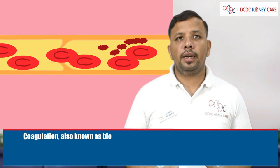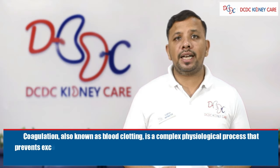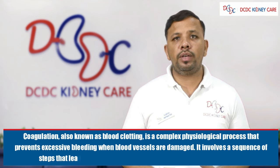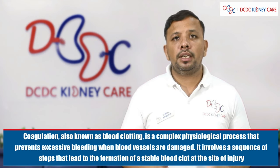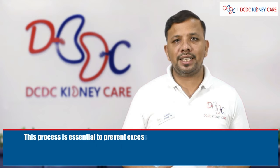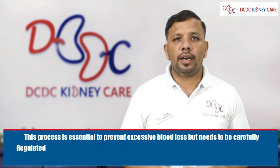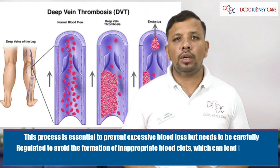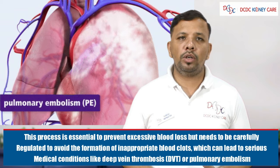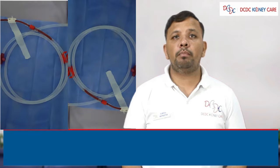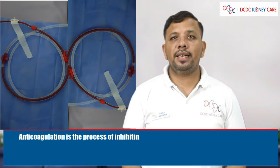Coagulation, also known as blood clotting, is a complex physiological process that prevents excessive bleeding when vessels are damaged. It involves a sequence of steps that leads to formation of a blood clot at the site of injury. This process is essential to prevent excessive blood loss, but needs to be carefully regulated to avoid formation of blood clots that can lead to deep vein thrombosis or pulmonary embolism.